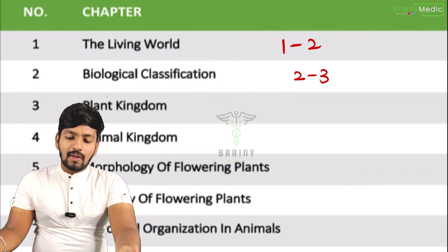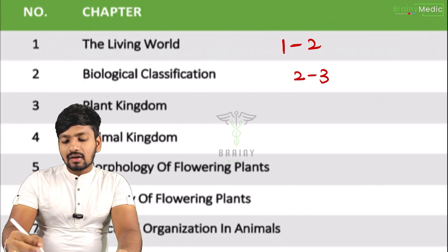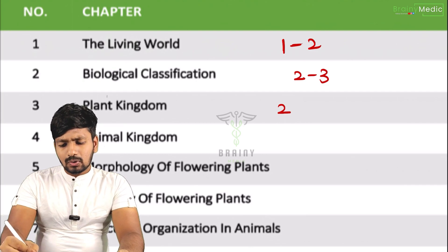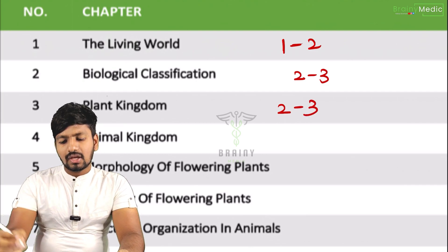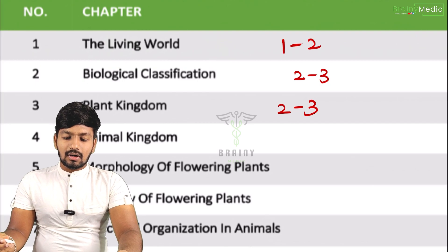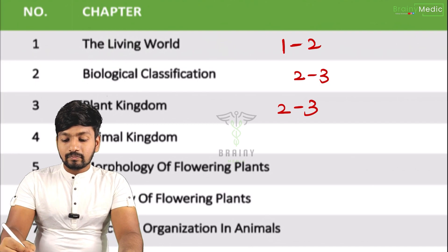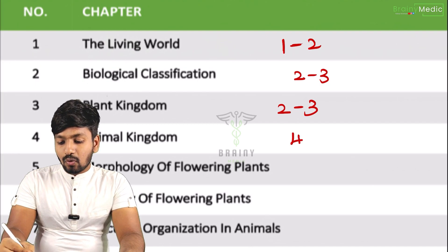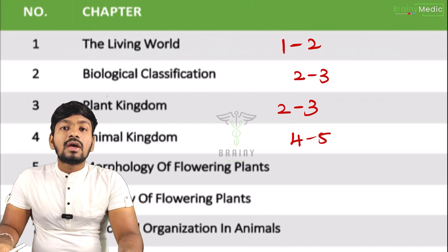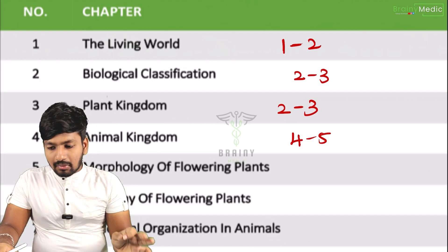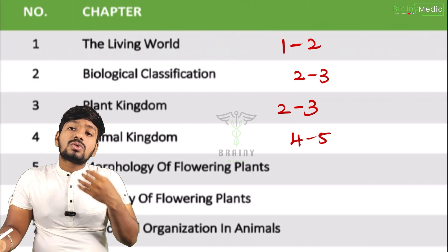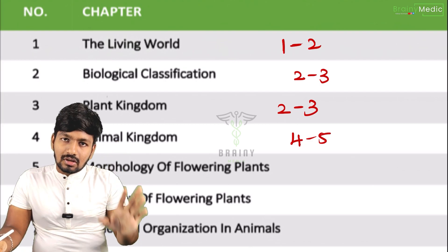Next is the plant kingdom — there are two to three questions. That is a great chapter. Animal kingdom has four to five questions minimum.